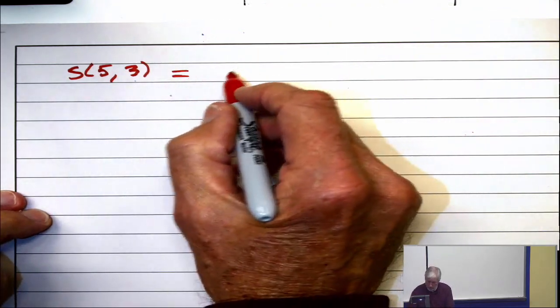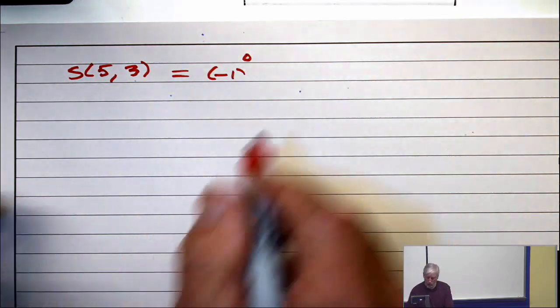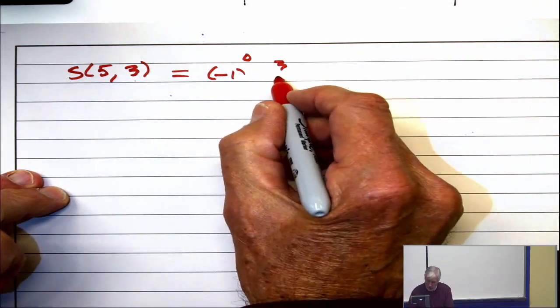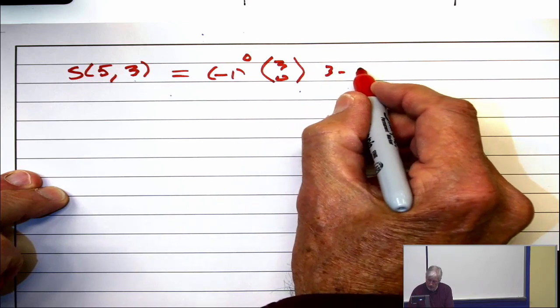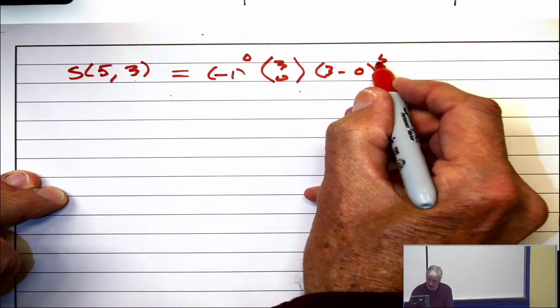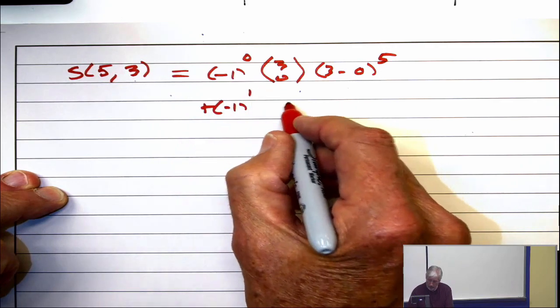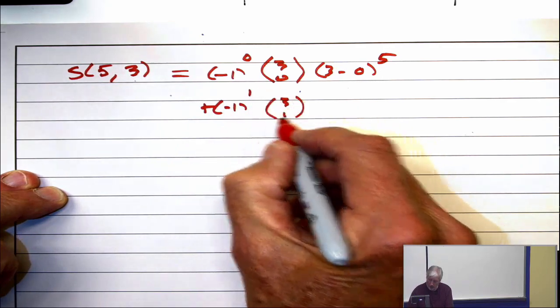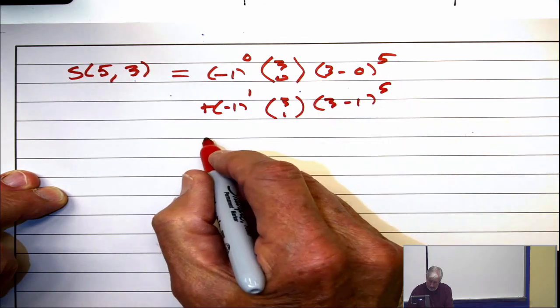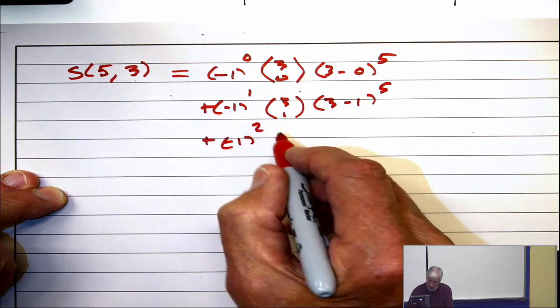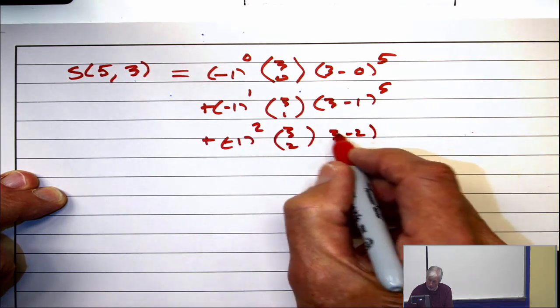It's minus 1 to the 0, times 3 choose 0, times 3 minus 0 to the 5th, plus minus 1 to the 1, times 3 choose 1, times 3 minus 1 to the 5th, plus minus 1 squared times 3 choose 2, times 3 minus 2 to the 5th,